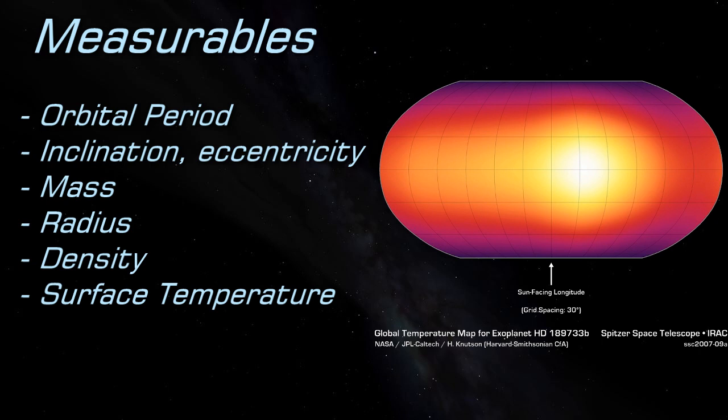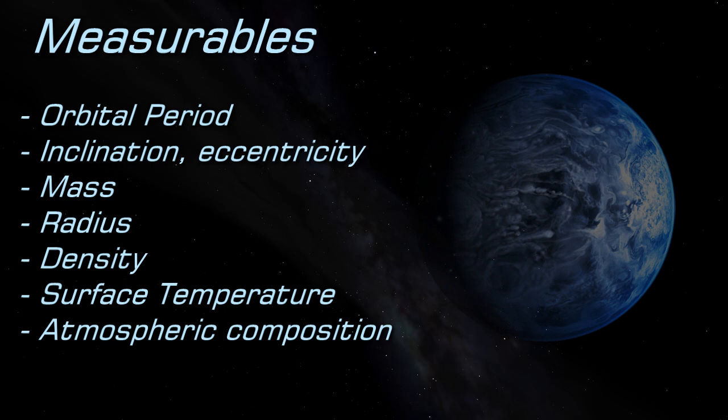Spectrographic changes during a transit allow their atmospheric composition to be determined. In the case of HD 189733 b, the colour of the planet has also been inferred via polarimetry to be a deep blue.